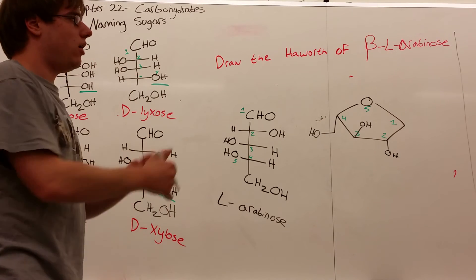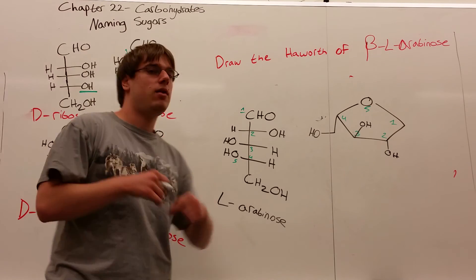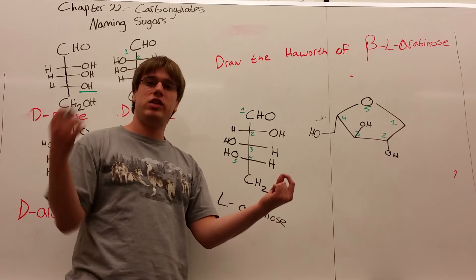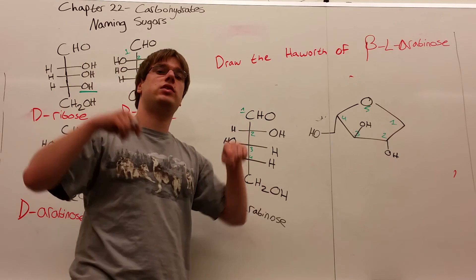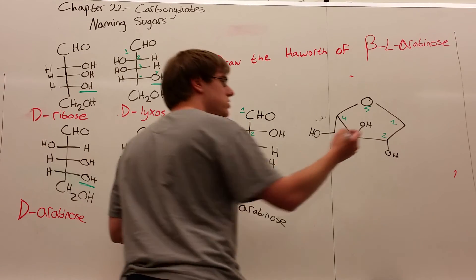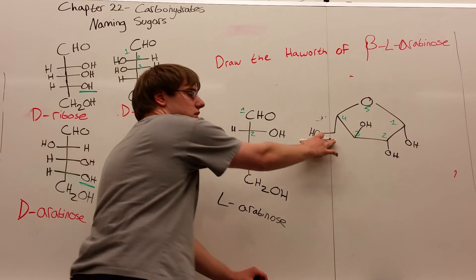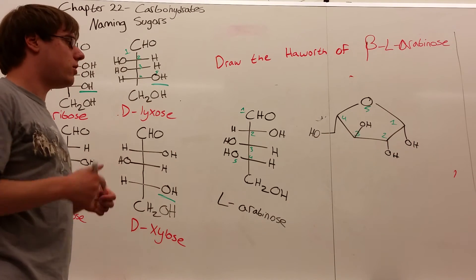We have the L-arabinose part, now we draw beta. Beta means cis—the anomeric OH and the CH2OH group of the penultimate carbon point in the same direction. For this, the OH has to point down to match the CH2OH. That's the Haworth of beta-L-arabinose.